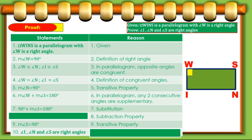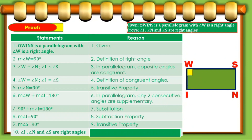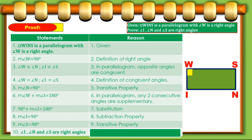So as we go further, statement number eight: the measure of angle I equals 90 degrees, with the reason subtraction property. And therefore, measure of angle I equals 90 degrees by transitive property. In that way, our final statement is that angle I, angle N, and angle S are right angles, by the definition of right angle. Is that clear?